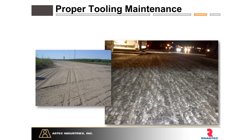Now we'll jump into tooling maintenance and how that affects our milled surface. The left picture shows what drum tooling looks like when so neglected that the milled surface is not even describable. This is more common when you have a broken tooth or a holder, a tooth that's fallen out — you'll have a white streak line down the milled surface, and that means it's time to stop and check teeth.